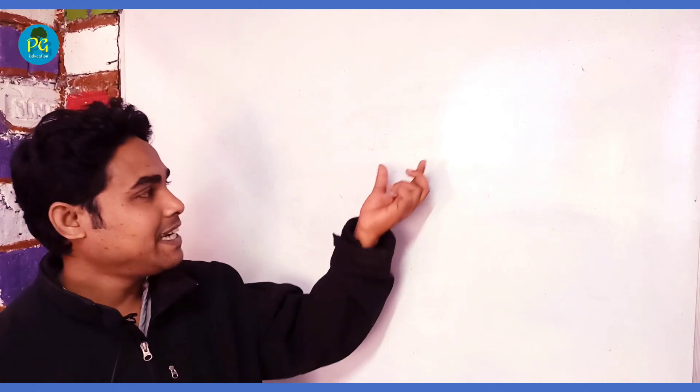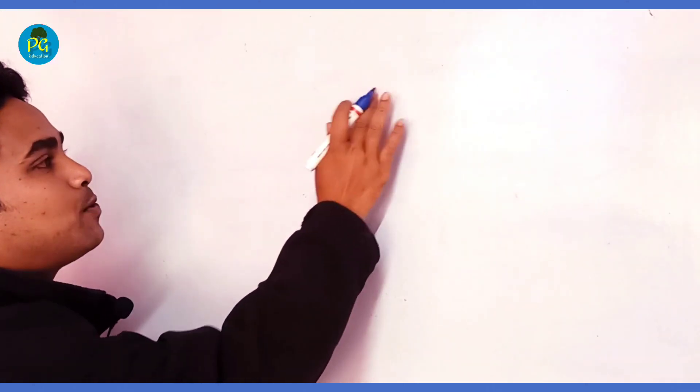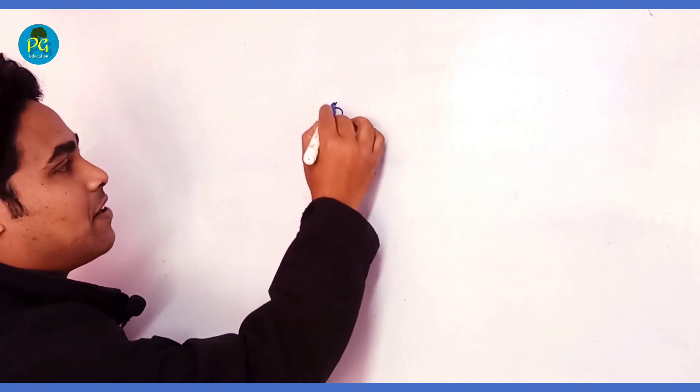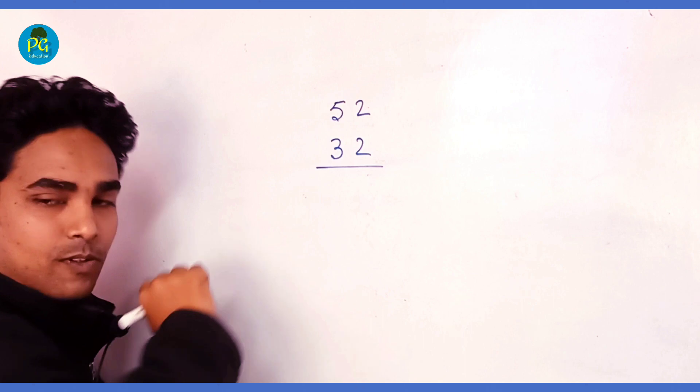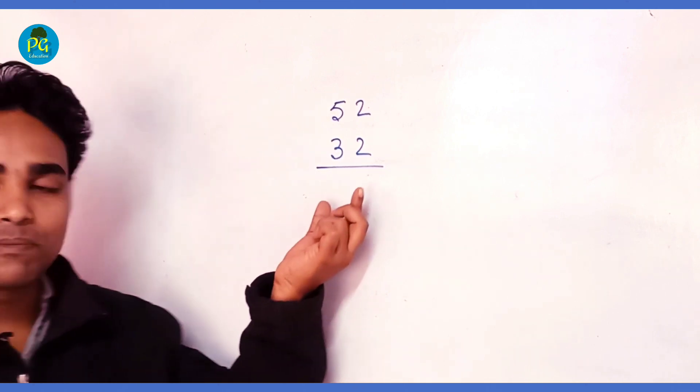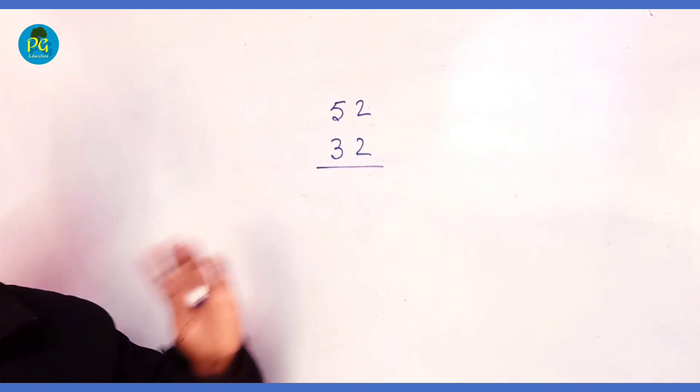Friends, welcome to our next video. In this video we will understand how to multiply any two-digit number with another two-digit number in a single line. Let's understand the process. Let us take any two-digit number, 52 and 32. If I ask you to multiply, can you multiply within a single line?